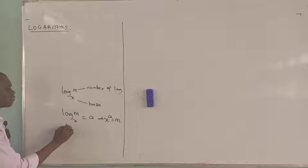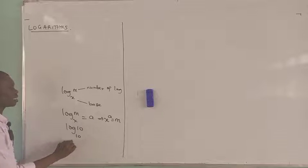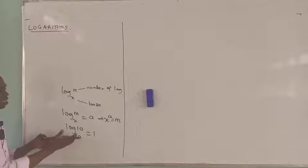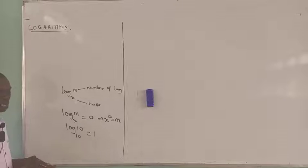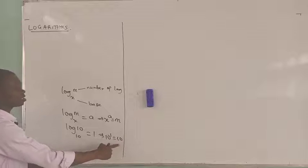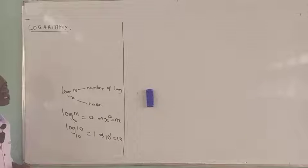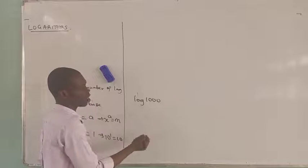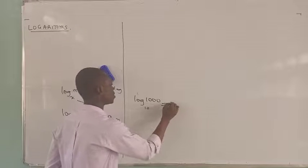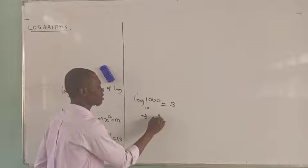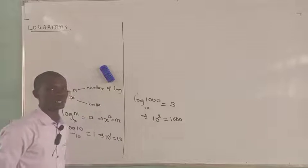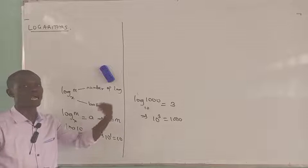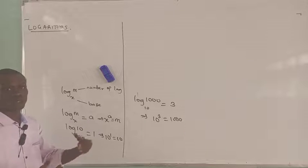For instance, if you have the log of 10 base 10, you will see that this is equal to 1. We are going to see this as one of the rules of logarithms: the logarithm of a number to the same base is equal to 1. Because this is the same thing as 10 raised to the power of 1 equals 10. And we have other examples — if I say the logarithm of 1,000 base 10, this is equal to 3, because 10 raised to the power of 3 is equal to 1,000.